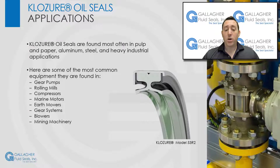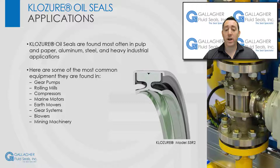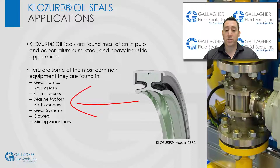So what are the typical applications for closure oil seals? They are mostly found in pulp and paper, aluminum, steel, and heavy industrial applications. Here are some of the most common equipment they are found in: gear pumps, rolling mills, compressors, marine motors, earth movers, gear systems, blowers, mining machinery, and as wipers in hydraulic applications.